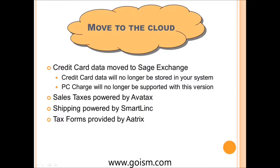Shipping will be powered by SmartLink. If you have a third-party shipping application like Starship or other shipping products, those will not be supported as of 2013. Sage is moving to a fairly integrated product that has all the information needed to process FedEx, UPS, USPS, and other third-party packages.